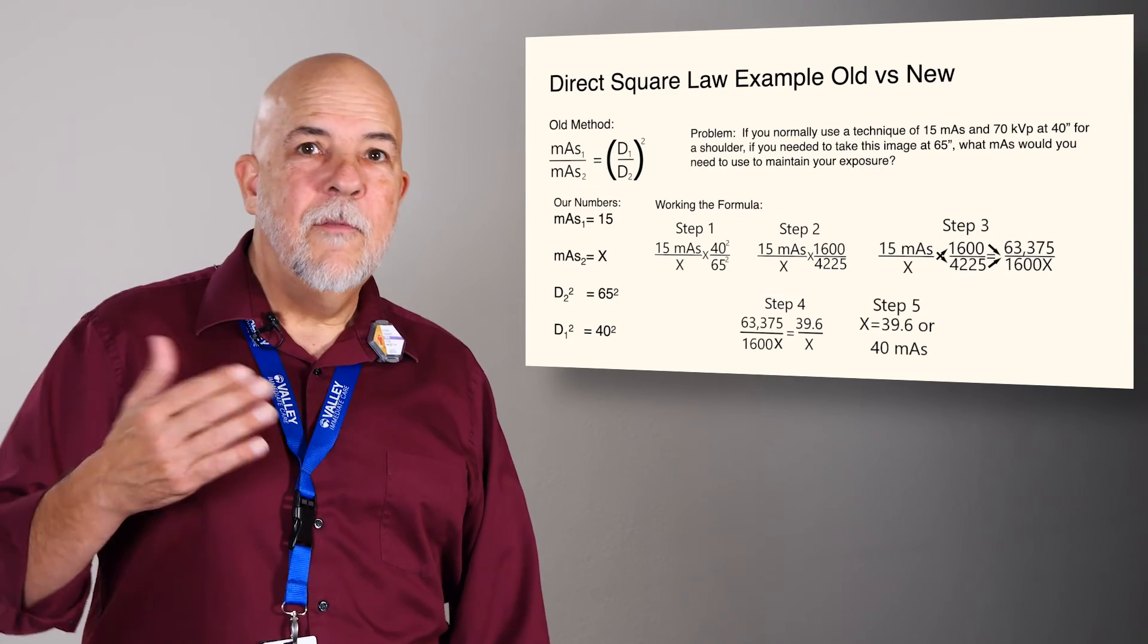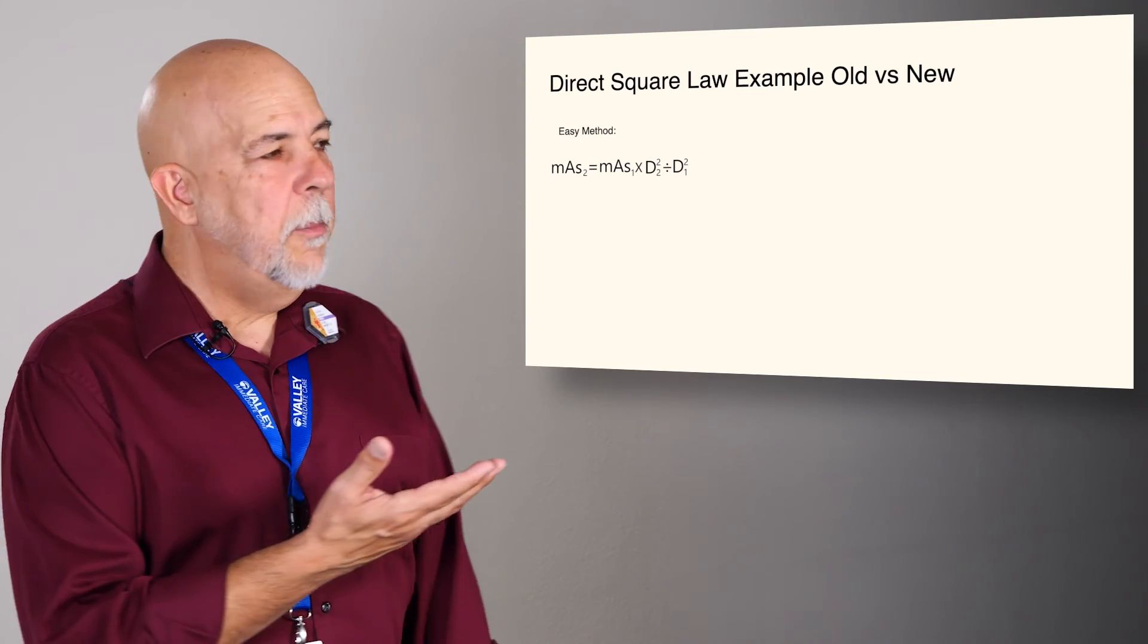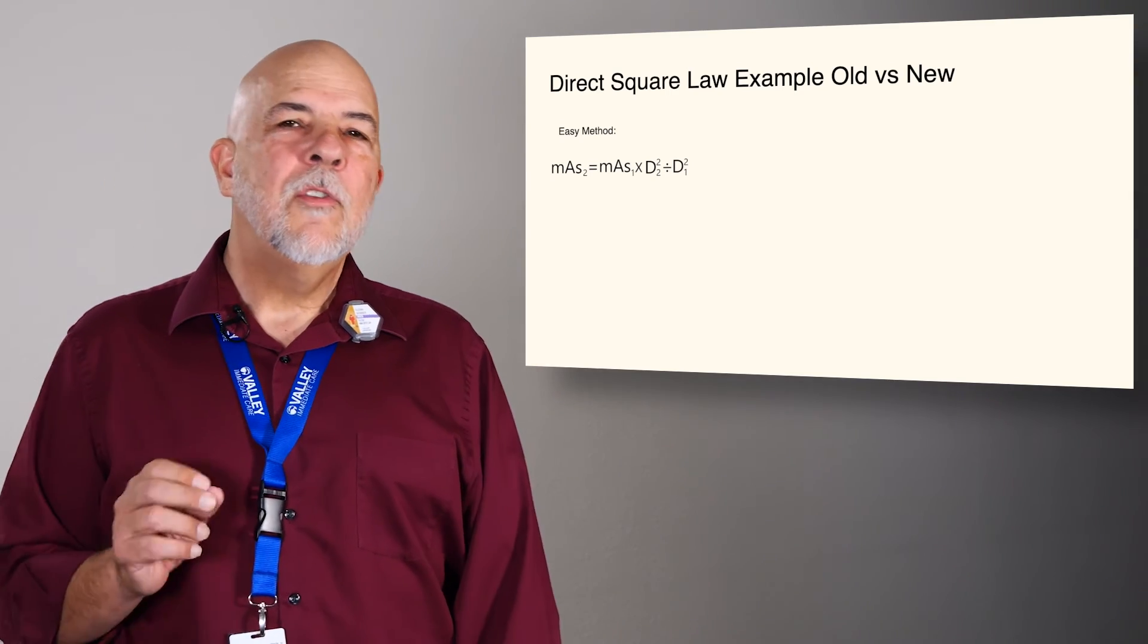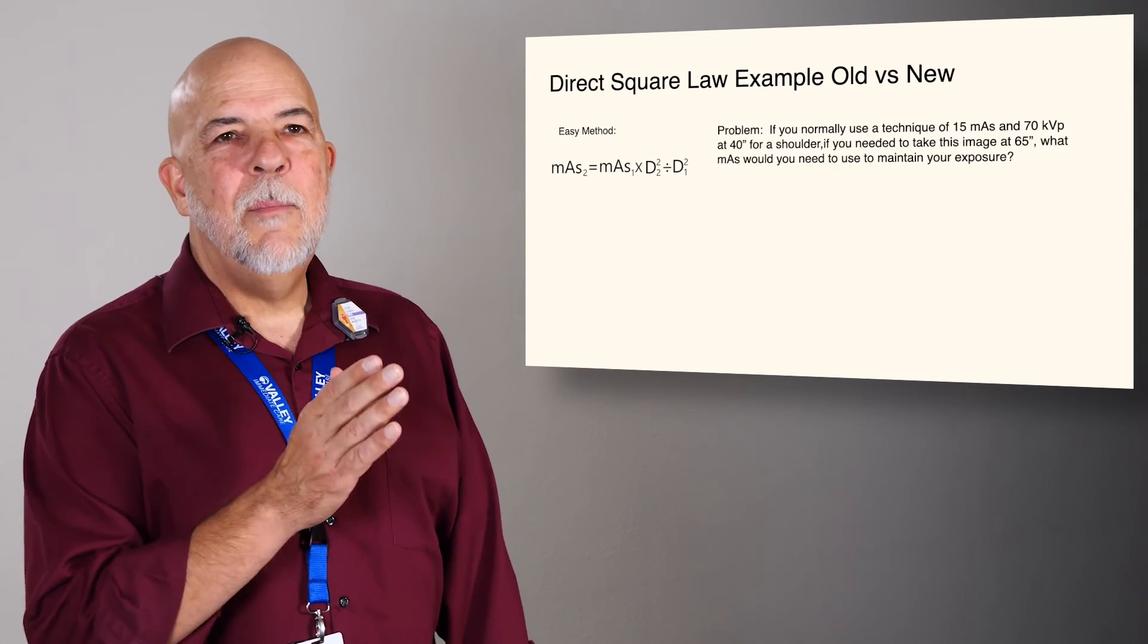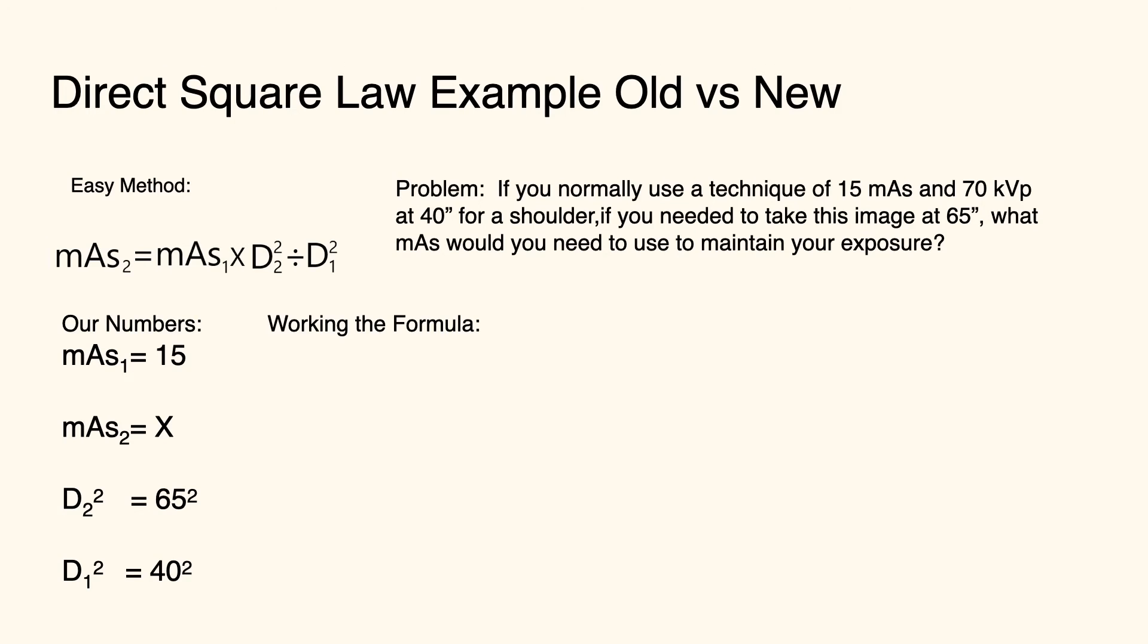Again, a lot of inverting, multiplying, reducing fractions. So here's our new formula, as you can see. Same question, same information. We simply plug in our numbers, and then we square our distances. We simply multiply and divide, and we come up with 39.6 mAs for our new exposure. Round up to 40.